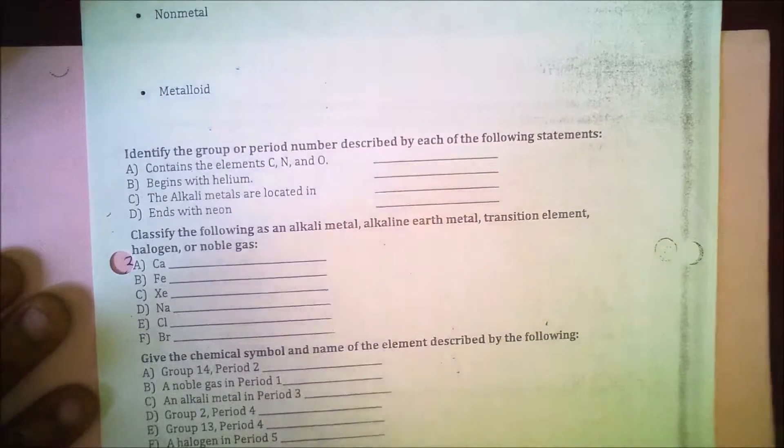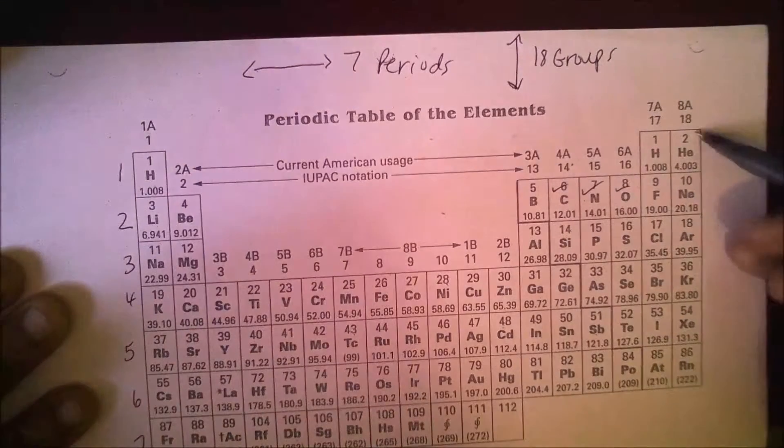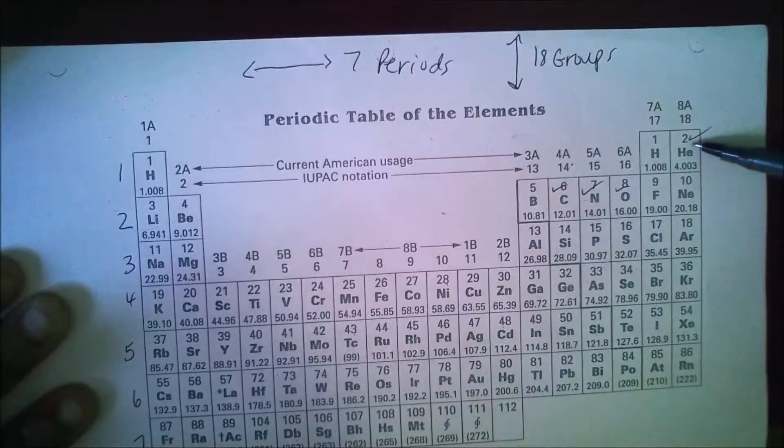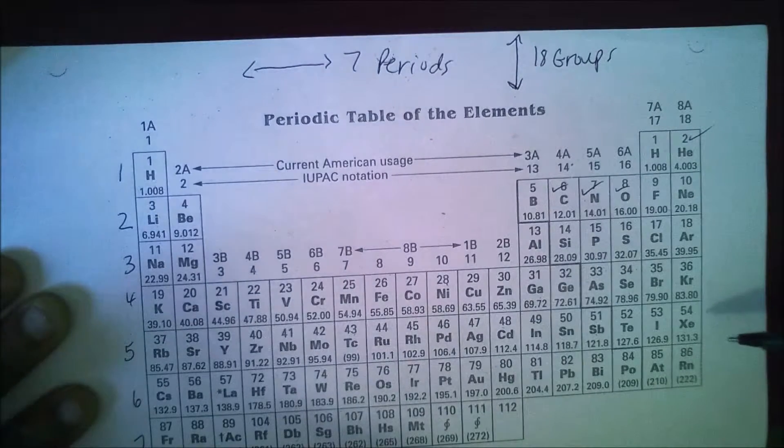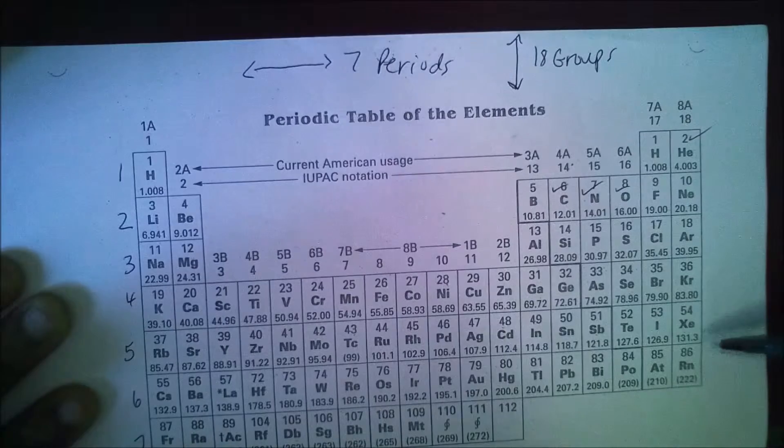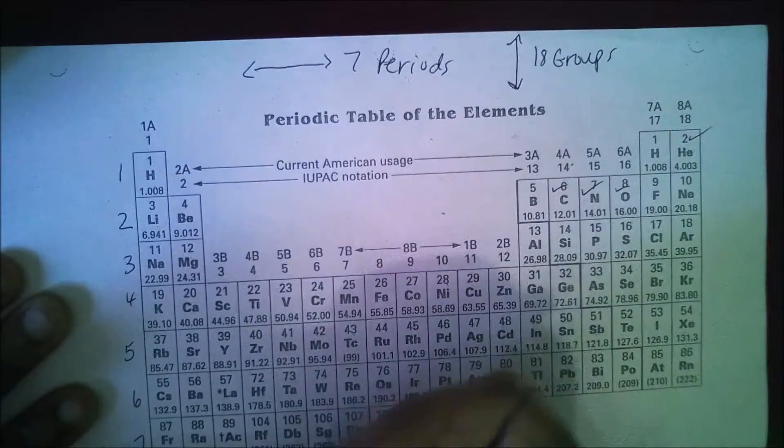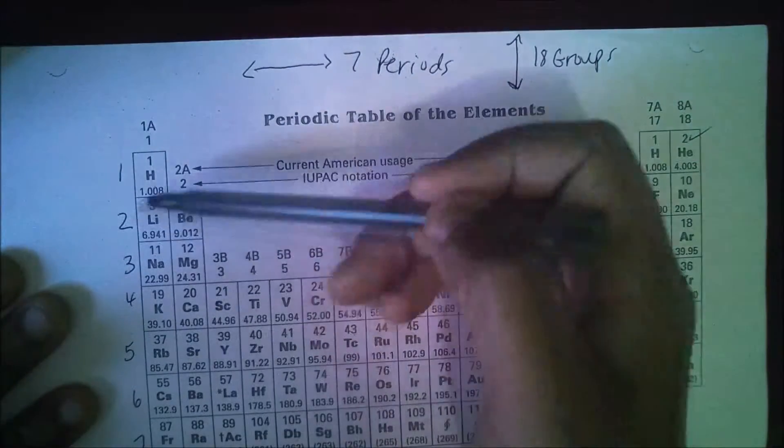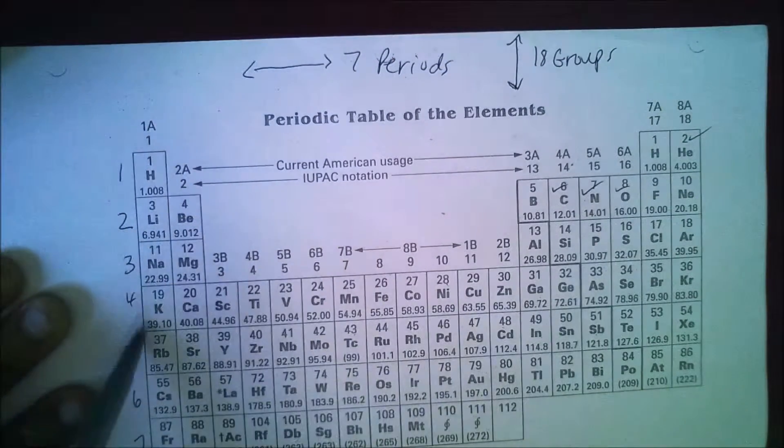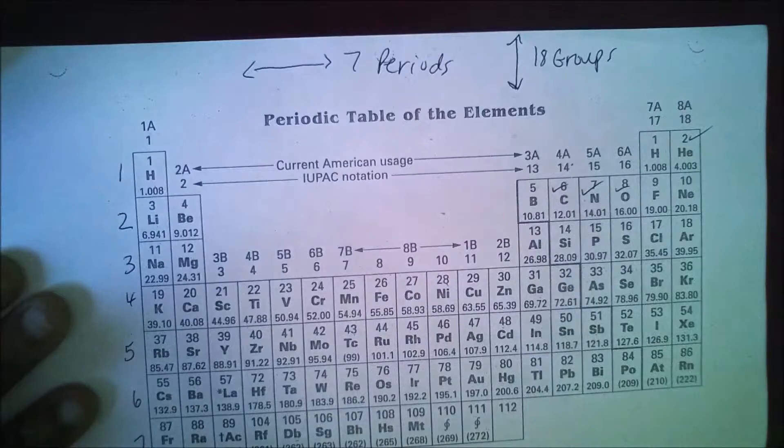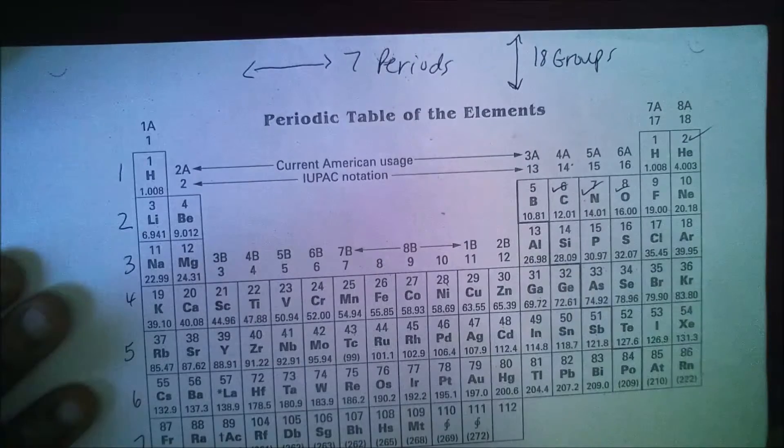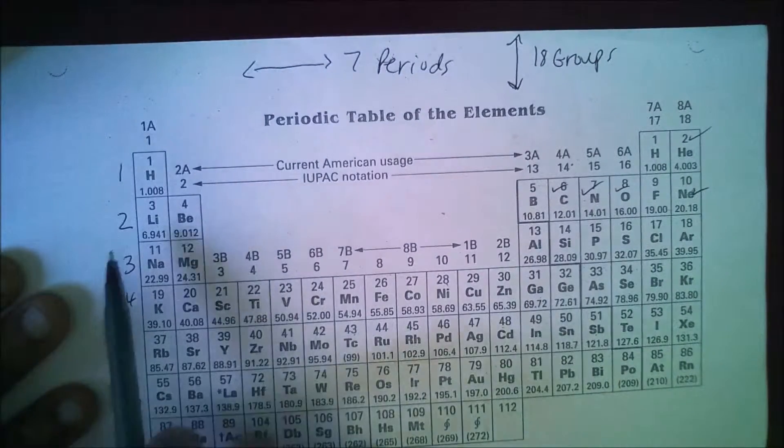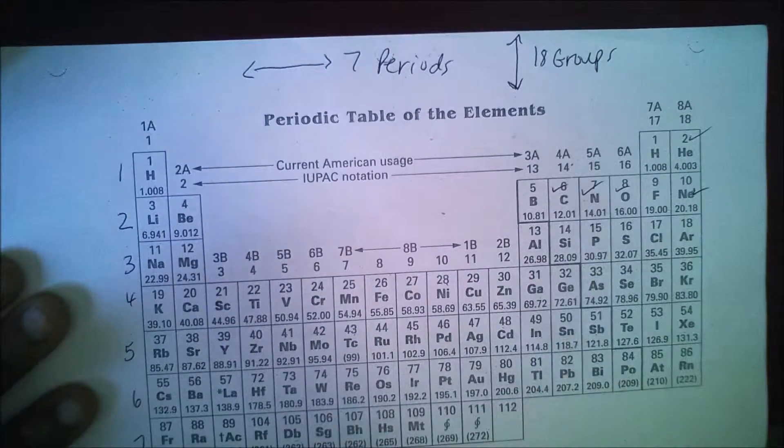The next one begins with helium. Right up here. If it begins with helium, that means we're talking about a group of elements. We're referring to group 18. The next question, the alkali metals are located in, well, here are my alkali metals. They're in group one. And then, the last question, it says, ends with neon. So, if I go all the way across and it ends with neon, obviously, we're talking about period two.